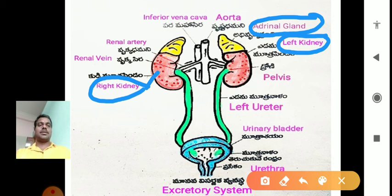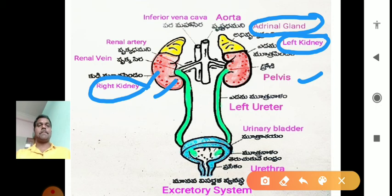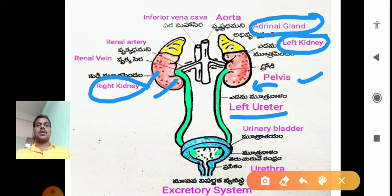Each kidney opens via a large tube-like opening called the pelvis, and this opening region is called the hilus. The hilus opens into the pelvis, and the hilus extends as a tube-like structure called the ureter.